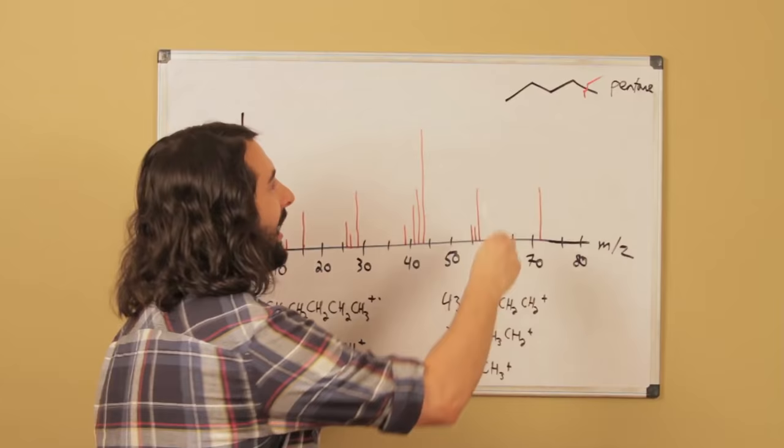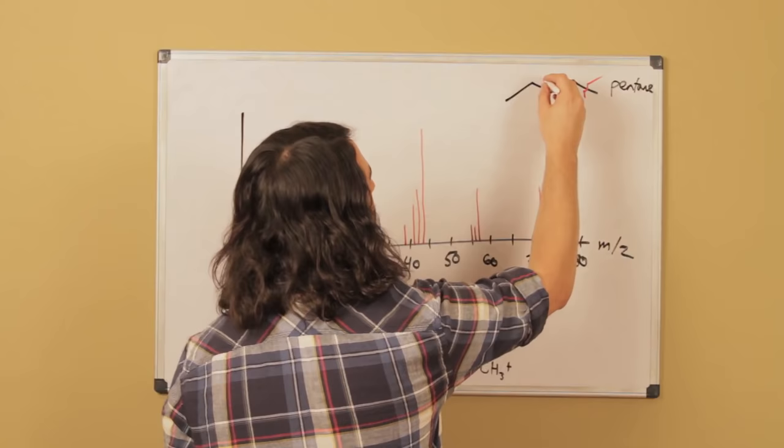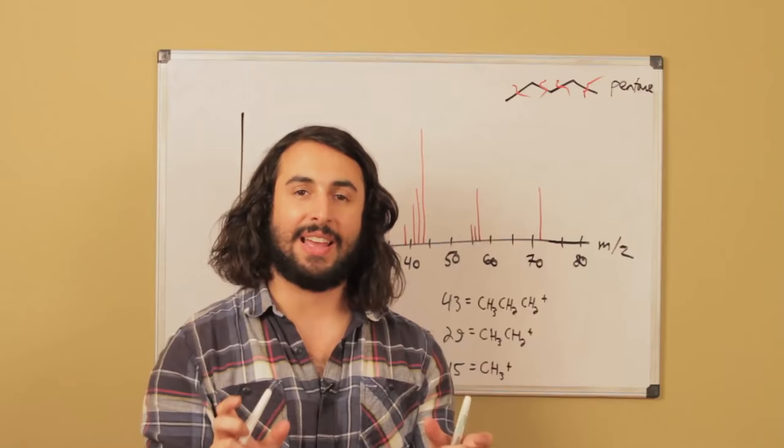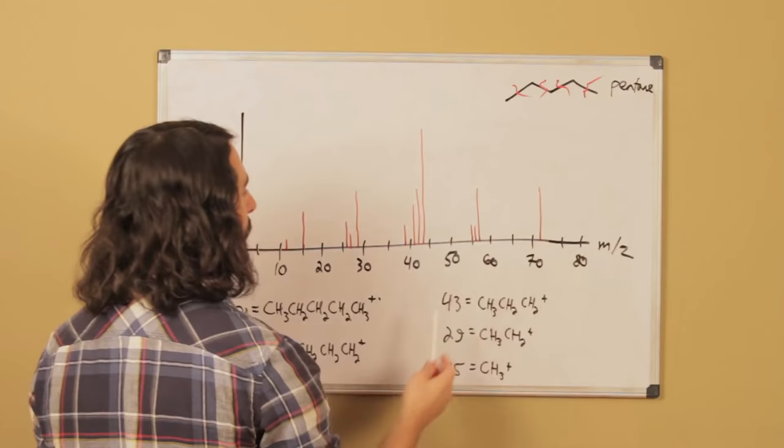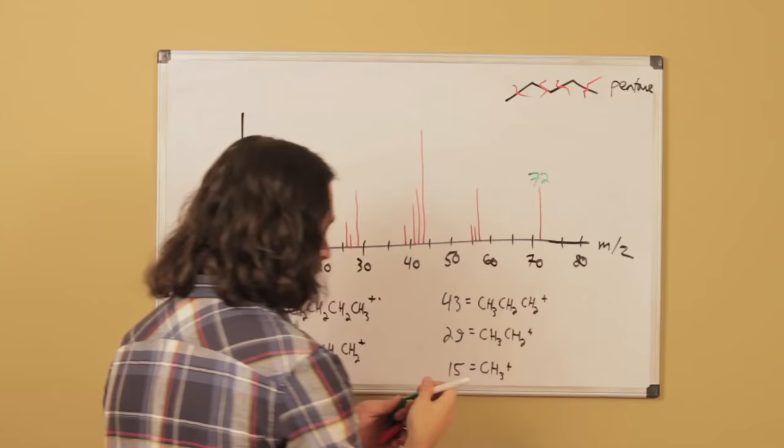Or we could smash it up right here, we could get a three carbon chunk and a two carbon chunk, or right here three and two. So there's all kinds of different chunks that we can get of the molecule, and those will have their molecular masses represented right here.